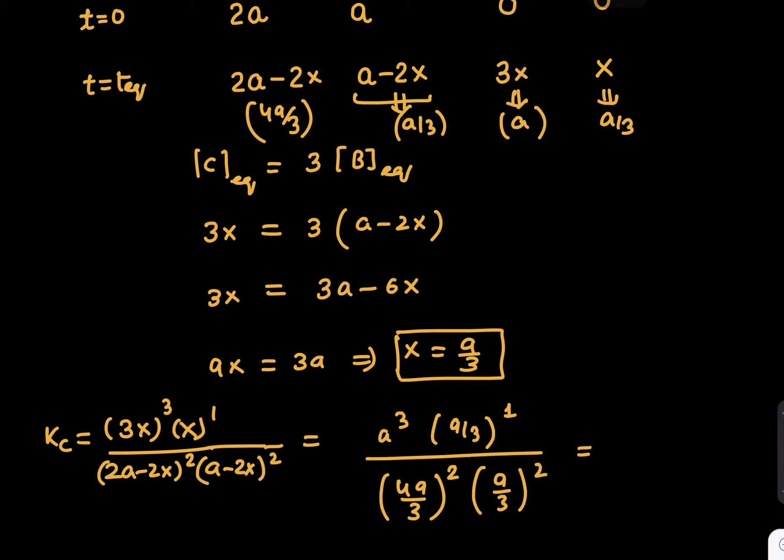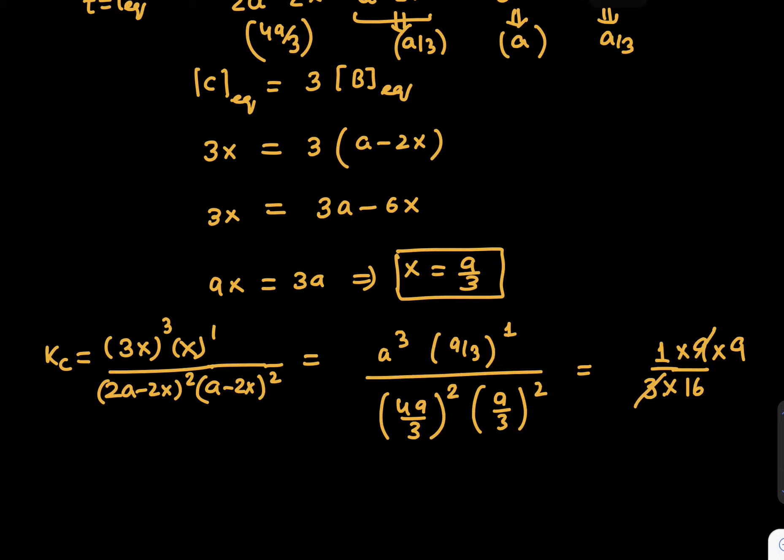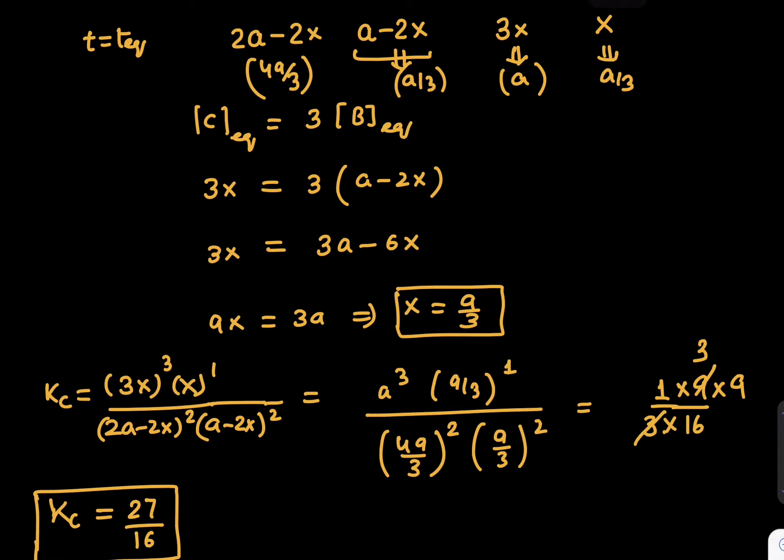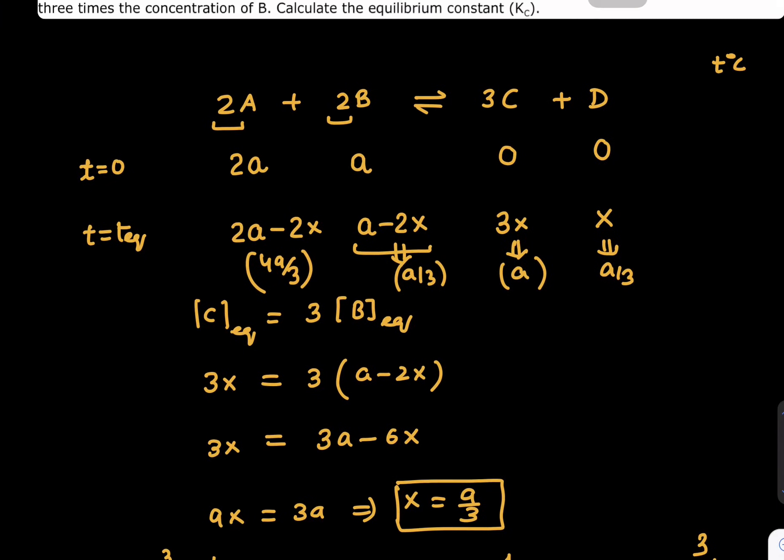It will become 1/(3 × 16) × 9 going up and this 3 squared also goes up. If you observe carefully, it becomes 27/16 and we can keep this as our answer. This is the right answer. I hope you understood this whole question.